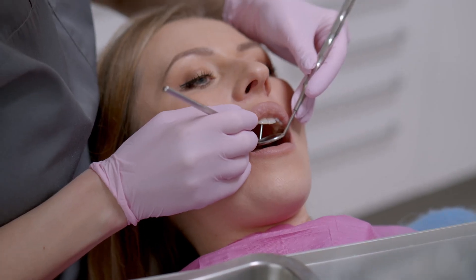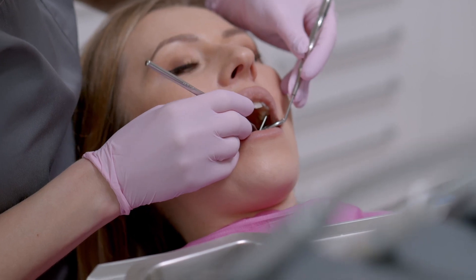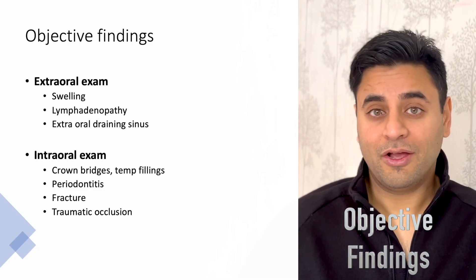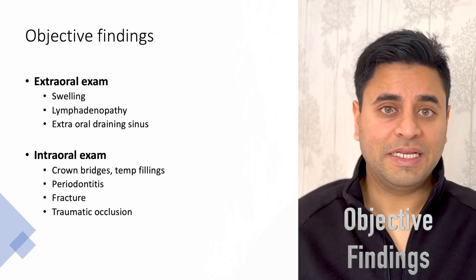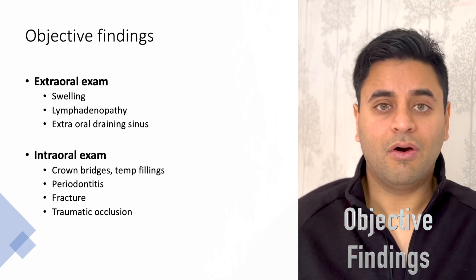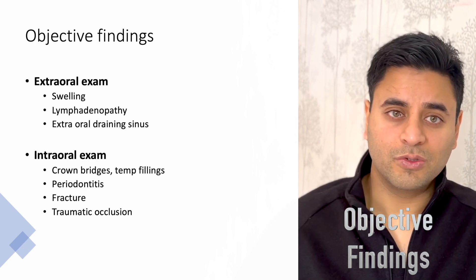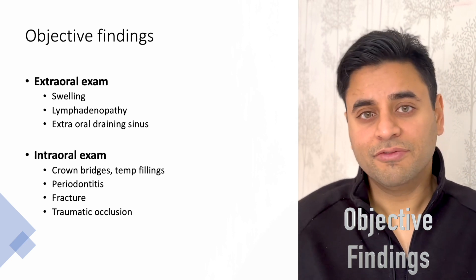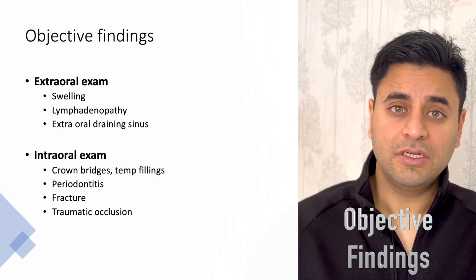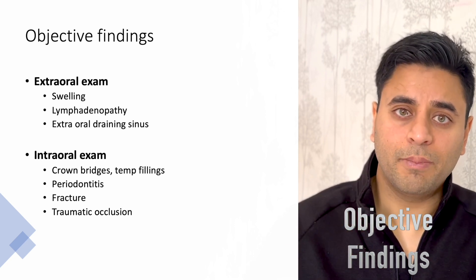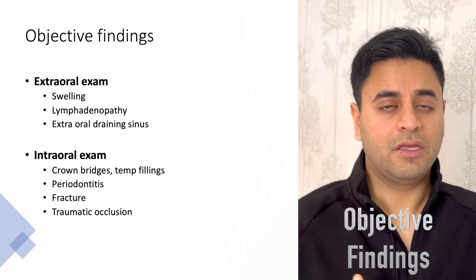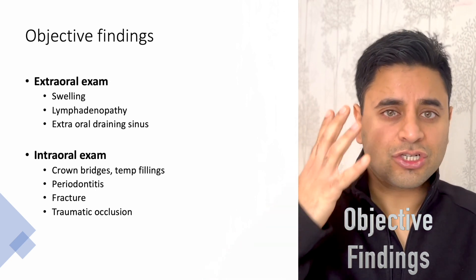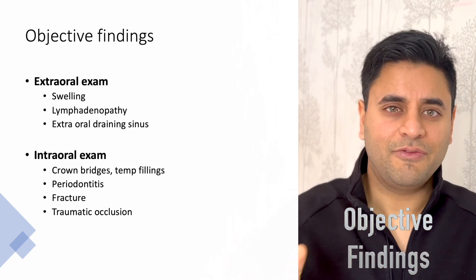Intraorally, you look for previous restorations such as crowns, bridges, or root canal treatments, as well as signs of periodontitis, tooth fractures, cracks, trauma, and traumatic occlusion — for instance, cusps that are heavily worn or habits contributing to occlusal trauma. To summarize: subjective findings come from the patient answering your questions. Objective findings come from you as the clinician — noting extraoral and intraoral observations. That is the key distinction between subjective and objective findings.